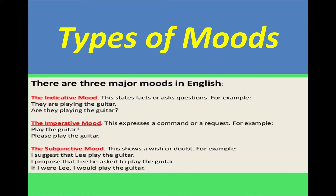In subjunctive mood, we don't follow the standard third person rule. As you can see, 'I suggest that Lee play guitar' — we do not add -s for third person. Another example: 'I propose that Lee be asked.' It doesn't say 'Lee is asked.' This is also subjunctive mood.